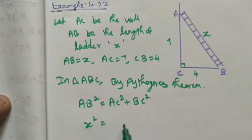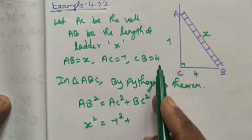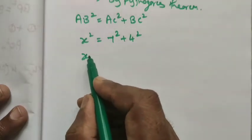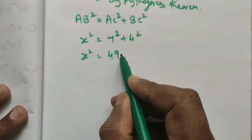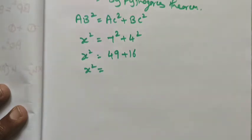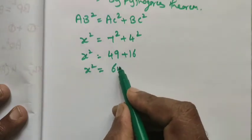So x² equals 7² plus 4². Then x² equals 49 plus 16, which equals 65.